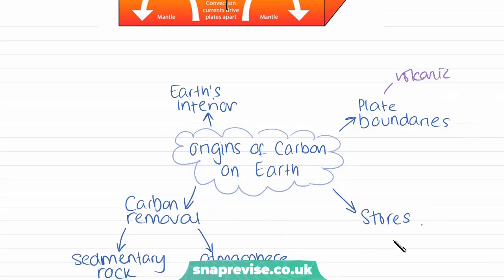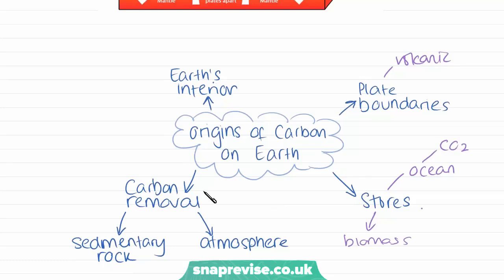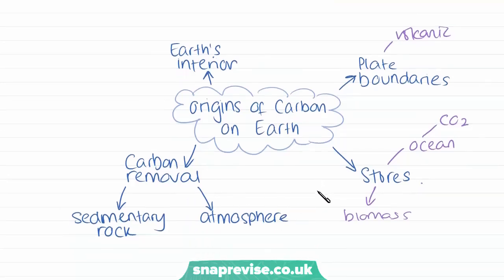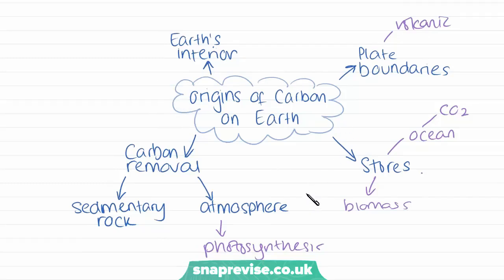We also have major stores of carbon, such as biomass — plants and animals — and the oceans, where carbon dioxide is dissolved in the water. There are also processes of carbon removal, such as trees and plants removing CO2 from the atmosphere through photosynthesis, and carbon being locked up in sedimentary rocks. The carbon cycle works by carbon starting in the Earth's interior, eventually being cycled back through the atmosphere and oceans, and returning to the Earth's interior.